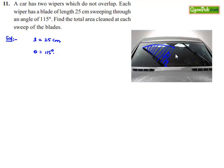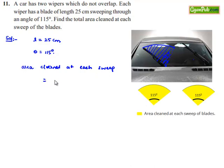Therefore, here two wipers are subtending two sectors. Therefore, area cleaned at each sweep of blades will be 2 times the area covered by the wiper in one sweep.